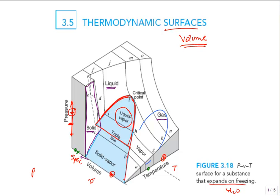There are two other two-phase regions. One is where liquid and solid are in equilibrium. That surface is very hard to see on this diagram — it's tucked right in here, and you're seeing the back side of it. There's a saturated liquid line where it changes to solid, and a saturated solid line where it begins to melt.